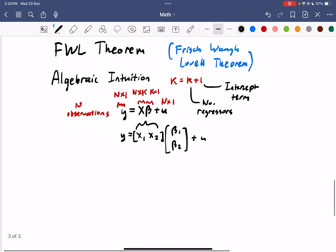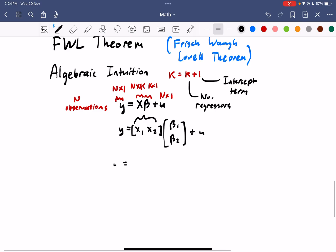Now using vector multiplication, we can clearly see that if we were to expand this out, we would get x1 times beta 1 plus x2 times beta 2 plus u. Let's just say that we only wanted to estimate this beta 2. So the FWL theorem gives us a way to get rid of this first set of regressors here.